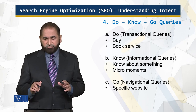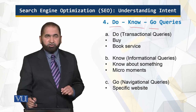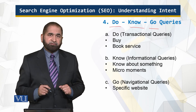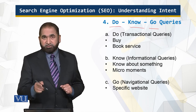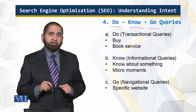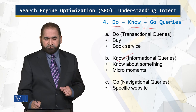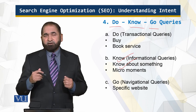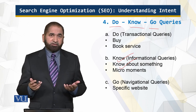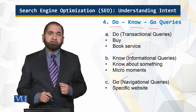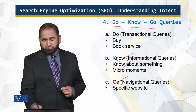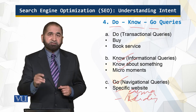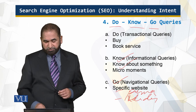We have three types of queries: Do, Know, and Go. Do are the action queries — buy something, book a service, book a ticket, make a reservation, buy a book — these are the transactional queries. Know queries are about knowledge: micro-moments where you hear a news item and want to know about it. Go queries are specific to a website — if a person wants to know about Puma shoes and you present Adidas, that person is not interested.